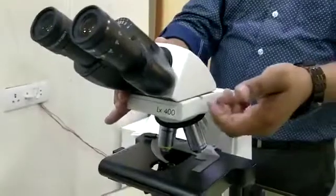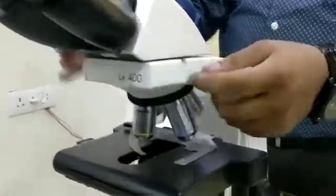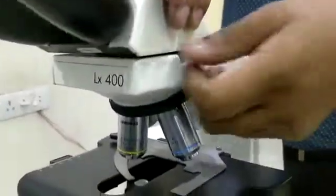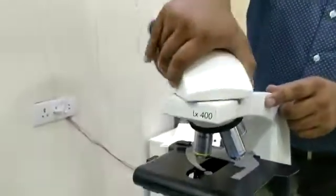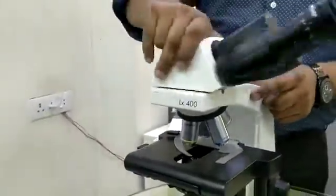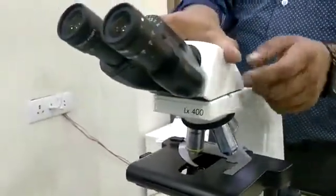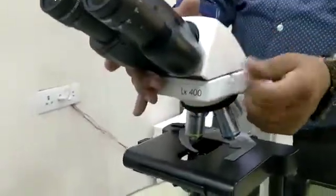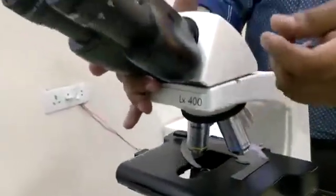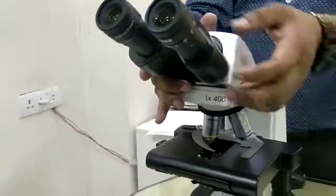Unlike other microscopes like Olympus CX21i or CX20i where you have to unscrew a screw, there is no screw here. So you can straight away rotate it 360 degrees. In other microscopes you have to unscrew first and then rotate it in an anticlockwise or clockwise direction.